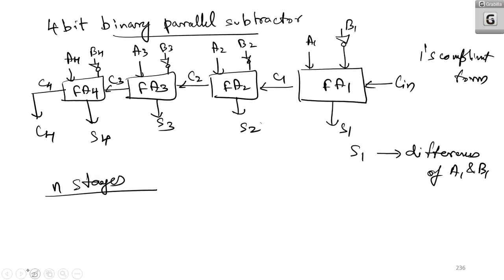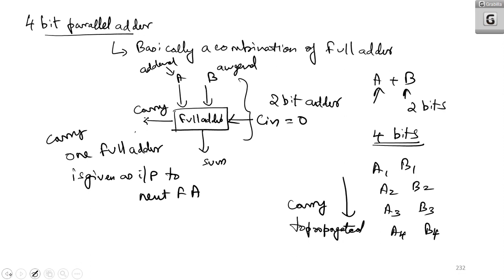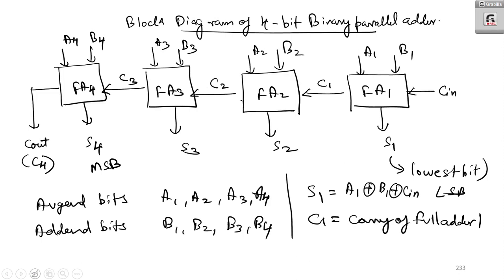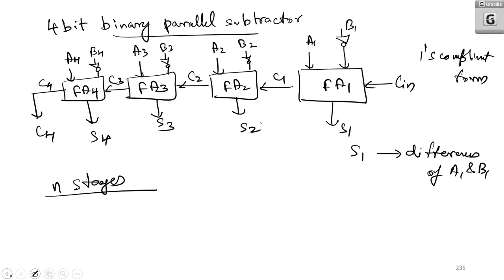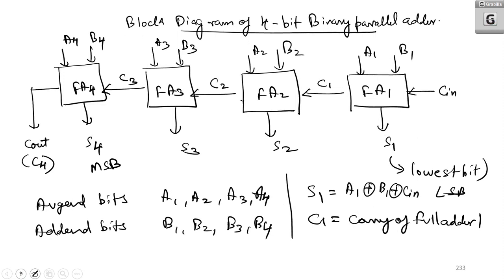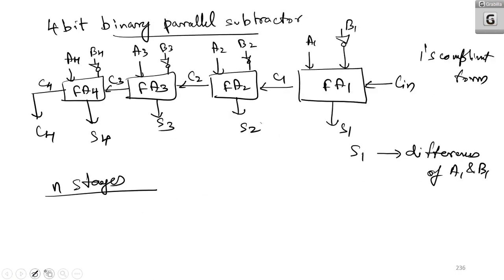So this lecture was a brief about the block diagram of the 4-bit binary parallel adder, how it operates based on the full adder, how the carry is getting propagated, and a basic block diagram of the 4-bit binary parallel adder. After that, we covered the 4-bit full subtractor and how it operates. In the next lecture, we will have the carry look-ahead adder, and with that we are ending module 2. Thank you.